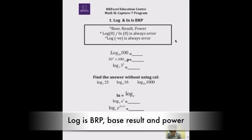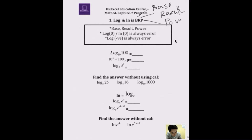So first, what does it mean by log? Log is always BRP — B is the base, R is the result, and P is the power. Log calculates the power of the base. For example, log 10 of 100 — think of 10 to the power of what equals 100. That's 10 to the power 2, so log base 10 of 100 equals 2.